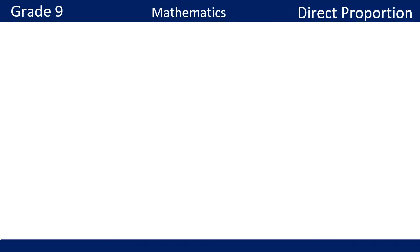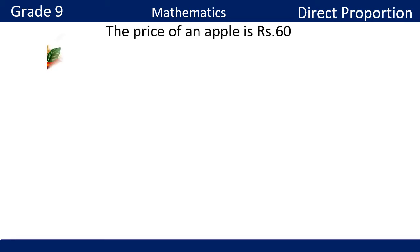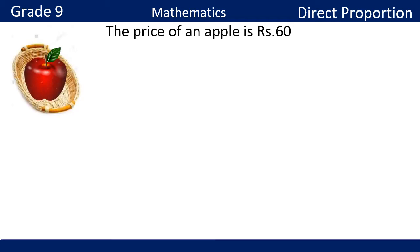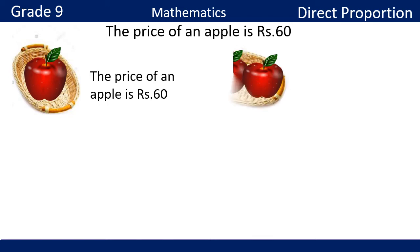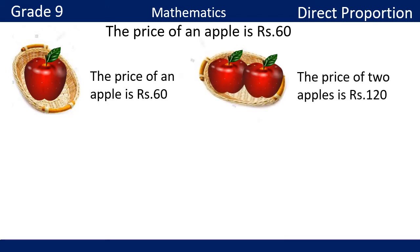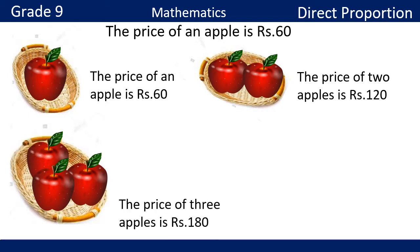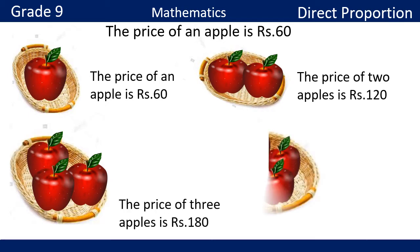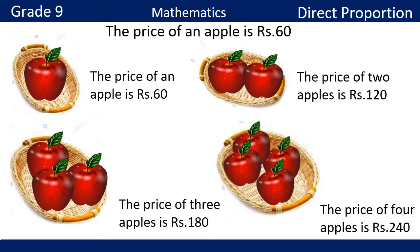Consider this figure: the number of apples and their corresponding prices. Price of one apple is 60 rupees, price of 2 apples is 120 rupees, price of 3 apples is 180 rupees, and price of 4 apples is 240 rupees. Based on the above example, a few ratios of different amounts of apples and the ratio of the corresponding prices are shown in the following table.